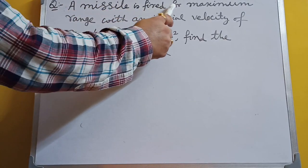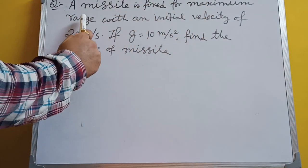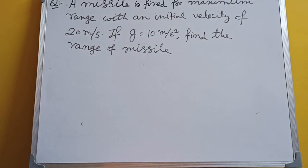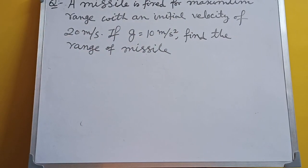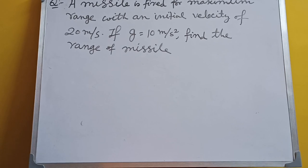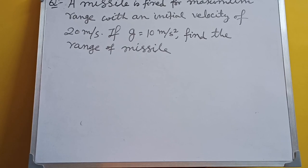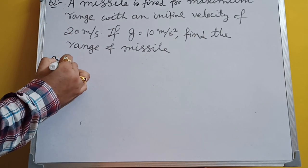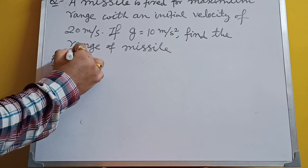The missile is fired for maximum range with an initial velocity of 20 m per second. If G is equal to 10 m per second square, find the range of the missile. This is the question. We have to find the range.